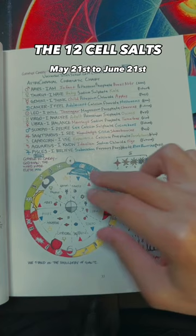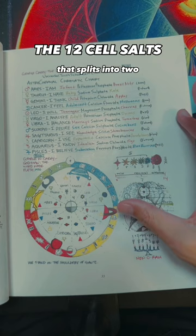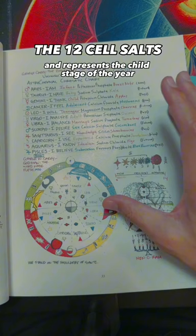May 21st to June 21st belongs to Gemini and it represents the trachea that splits into two, also represents lungs and the two arms, including the two hands, and represents the child stage of the year and is related to the cell salt potassium chloride, which can be found in apples.